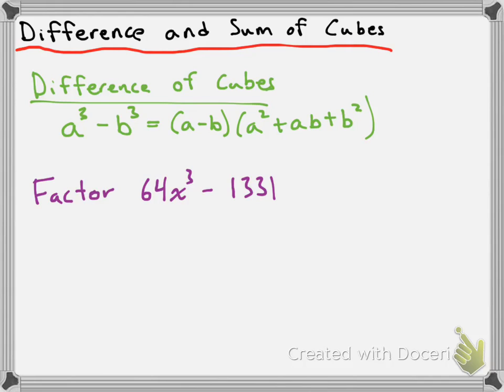So we have to express 64x cubed as one single thing to the power of 3. I know that 4 to the power of 3 is 64. So I can write that first term as 4x all to the power of 3, because that power of 3 affects the 4. So 4 cubed is 64, and then x cubed is x cubed.